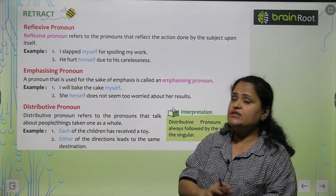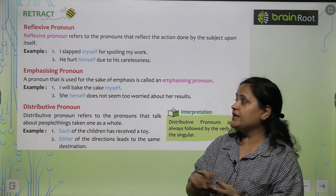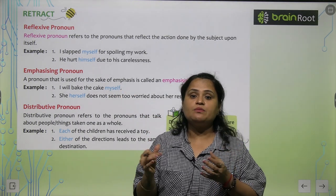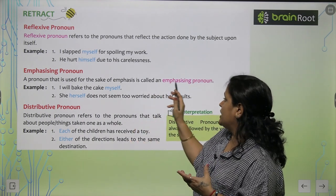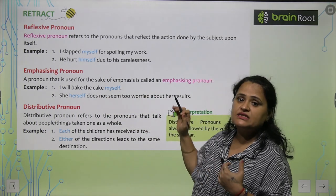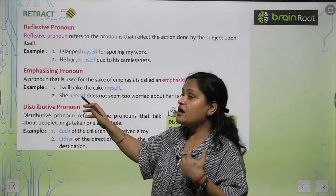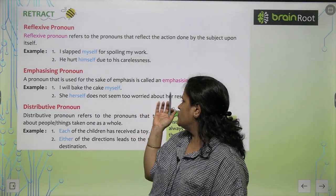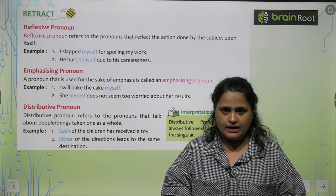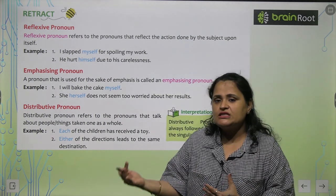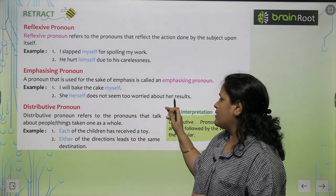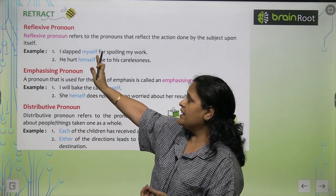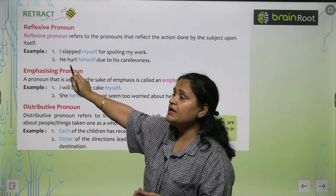Now, emphasizing pronoun. For emphasizing and reflexive, we use the same words — like myself, himself. But emphasizing is when a pronoun is used for the sake of emphasis, when we say something with extra stress. For example: 'I will bake the cake myself.' 'She herself does not seem to worry about her results.' A simple sentence would be 'She does not seem to worry about her results,' but when we want to emphasize, we say 'She herself does not seem to worry.' Also, in reflexive pronouns the pronoun is always preceded by a verb, like 'I slapped myself,' 'He heard himself.' Emphasizing pronouns are used when we want to stress something.